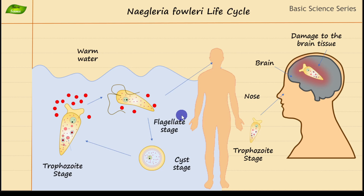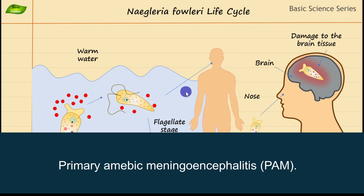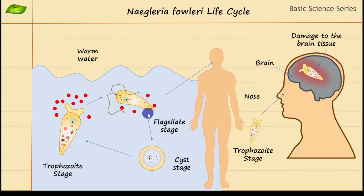Naegleria fowleri is also referred to as the brain-eating amoeba. It can cause damage in the host's brain, and it can live in the environment as well as cause infection in the host, especially in humans. The infection is known as PAM, which is primary amoebic meningoencephalitis. We'll discuss everything about the life cycle — how it survives in the environment — and I'll discuss a few important aspects of the life cycle.